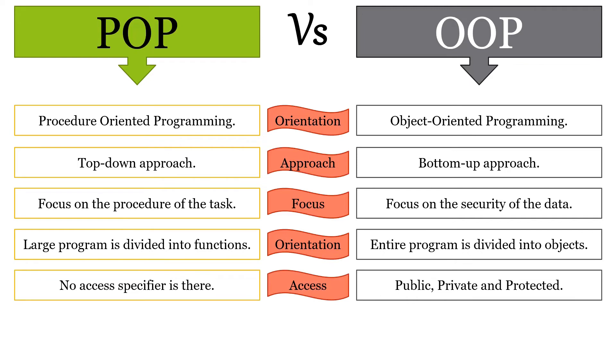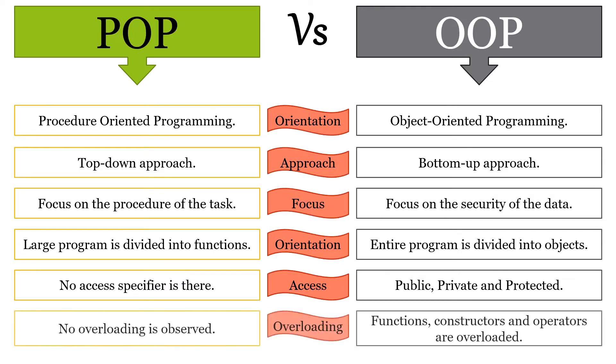In POP, there is no access specifier whereas in OOP, the access specifiers are public, private, and protected. In POP, there is no overloading whereas in OOP, functions, constructors, and operators are overloaded.